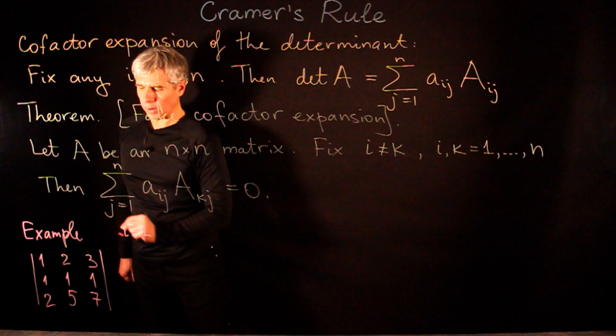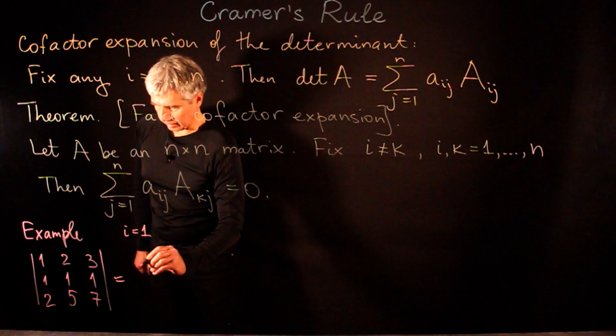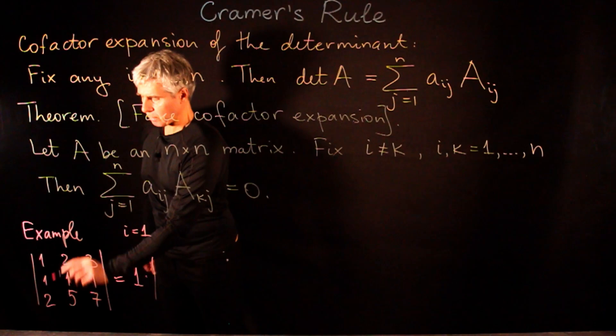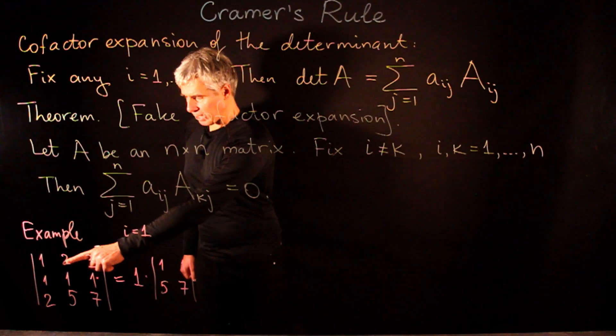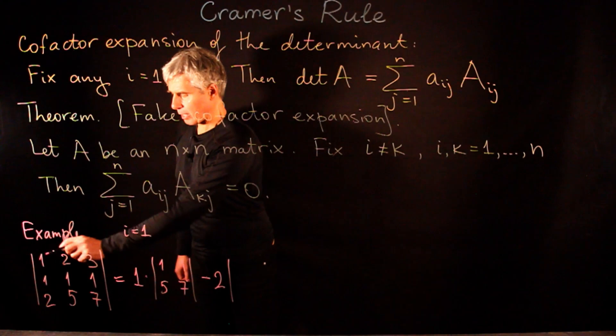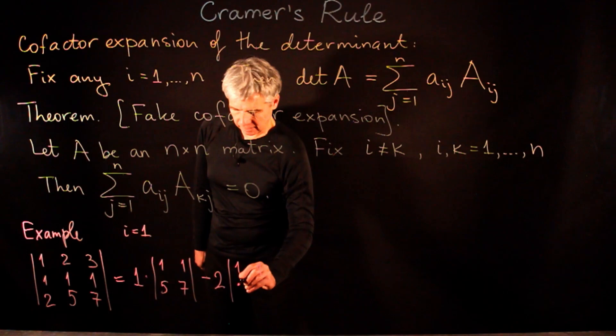Let us take i equals 1, so we expand the determinant along the first row. We get 1 times the determinant obtained by removing the first row and first column, which is [1,1; 5,7], then minus 2 times the determinant obtained by removing the first row and second column, which is [1,1; 2,7].